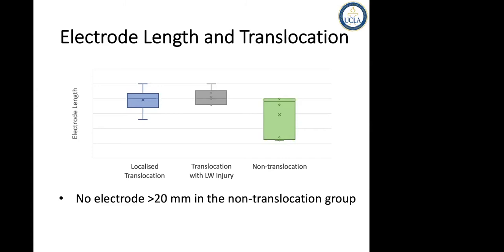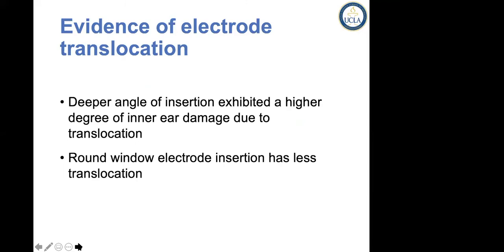These studies were done by analyzing the first generation of cochlear implant electrodes. If these older generation electrodes didn't demonstrate translocation, the newer 20-millimeter electrode, which is much more flexible and thinner, is probably at least as safe as the older generation. The other thing we found was that deeper angle insertion clearly demonstrated a higher degree of inner ear damage.